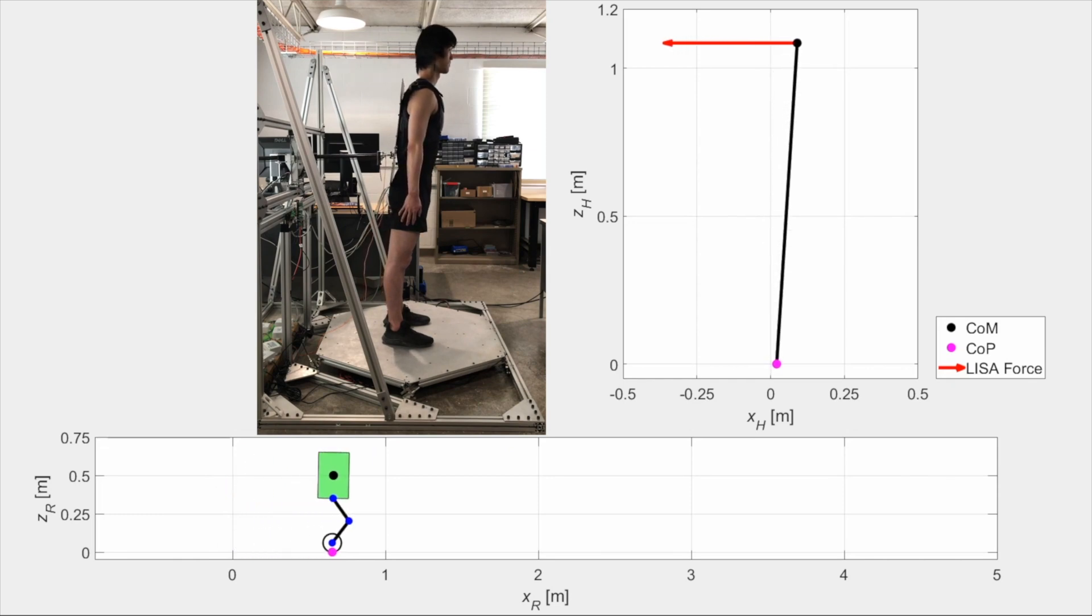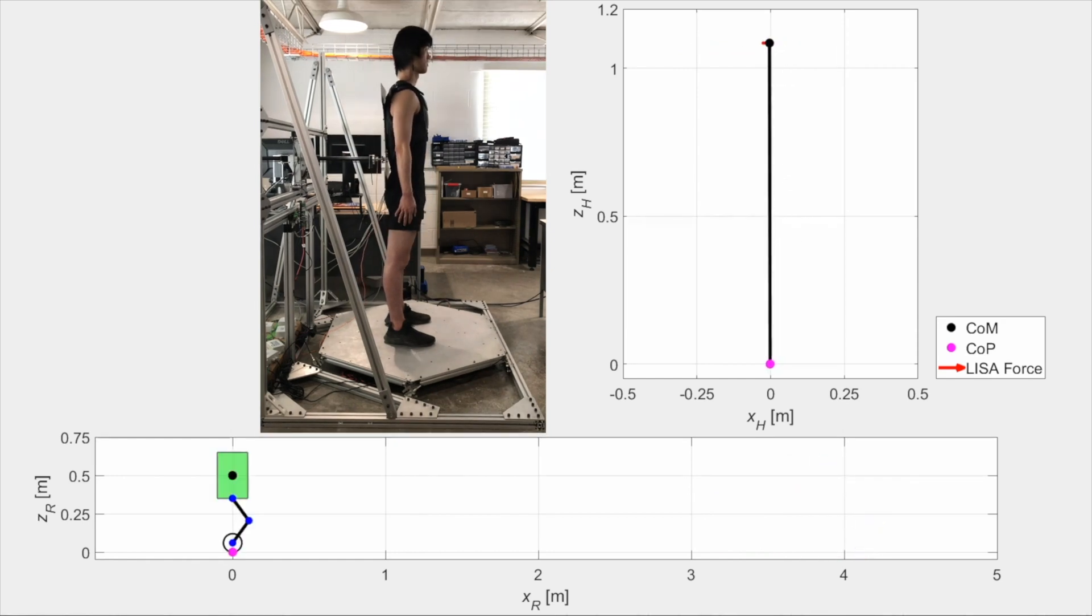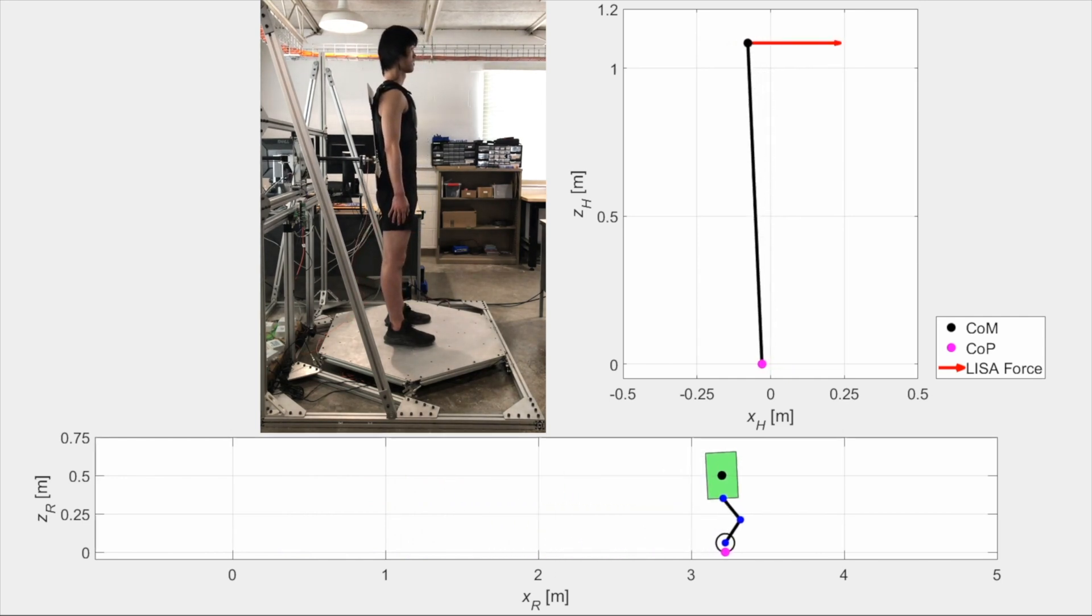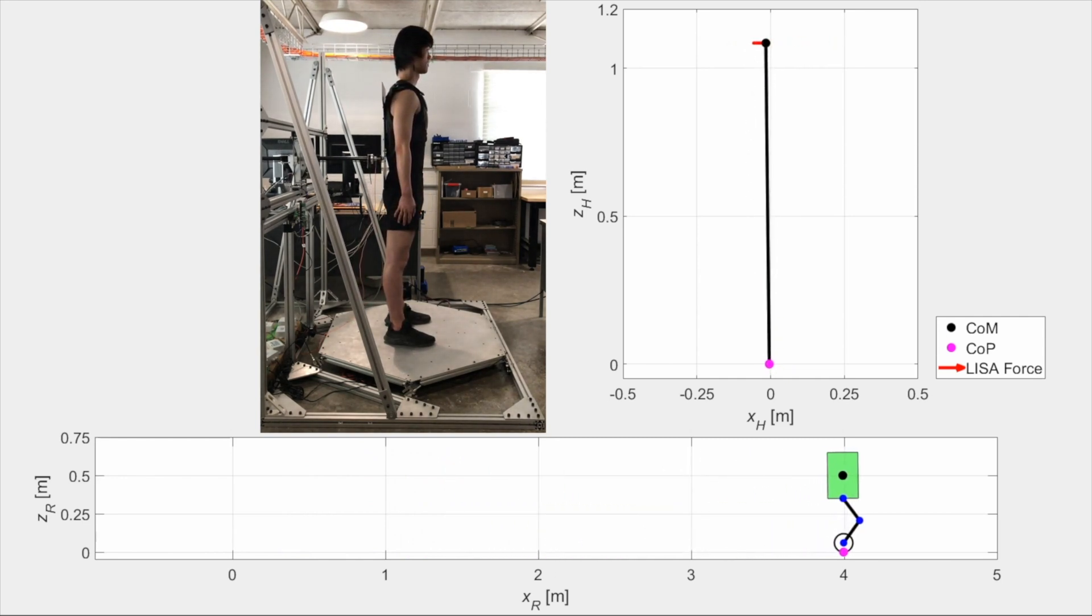The first mapping maps the human's tilt to the robot's velocity and grants more control authority to the robot. The second mapping maps the human's tilt to the robot's acceleration and grants more control authority to the human. Note that the two mappings reflect opposite design philosophies in shared control.